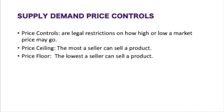So what are price controls? Price controls are the legal restrictions on how high or low a market price may go. That means the government can come in and tell you how high or how low you can price your particular good. A price ceiling is how high a seller can sell a product, meaning they cannot sell it for anything above the price ceiling. A price floor is the lowest a seller can sell a product, meaning you cannot sell that product below the specific price that's dictated.